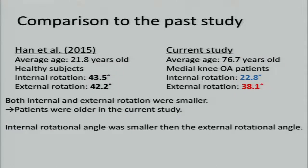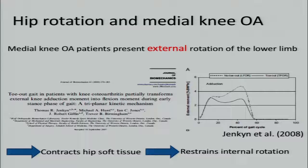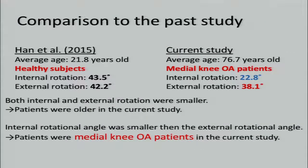In the past report, internal and external rotation angle were similar. However, in the current study, internal rotational angle was smaller than the external rotational angle. Medial knee OA patients present external rotation of the lower limb during gait to reduce the knee adduction moment. If the lower limb is externally rotated for a long time, hip soft tissue will be contracted and consequently restrain hip internal rotation. Therefore, the smaller internal rotation may be because the current study included medial knee OA patients.